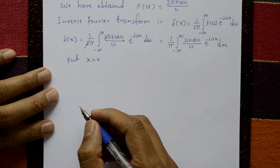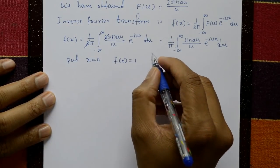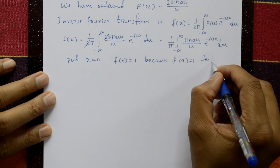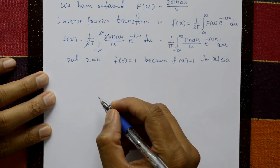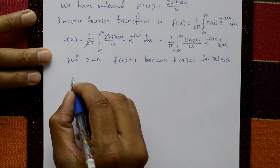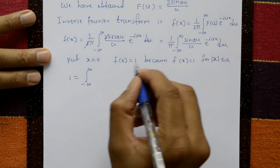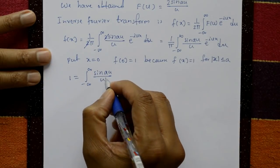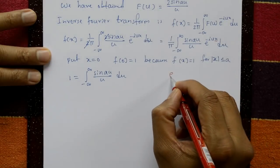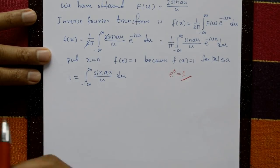Now put x = 0. Since f(0) = 1 (because |0| ≤ a), we get 1 equals 1/π times the integration from minus infinity to plus infinity of sin(a·u)/u with respect to u, since e^0 = 1.